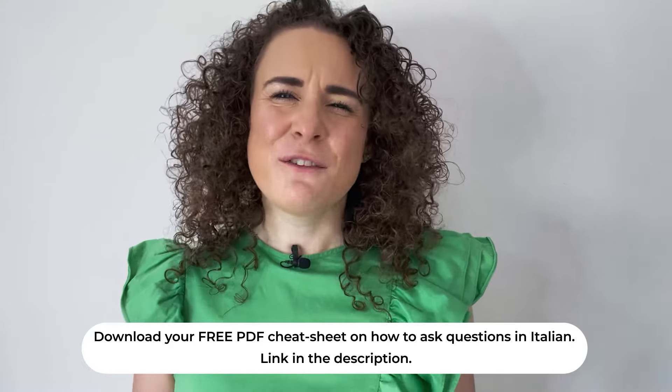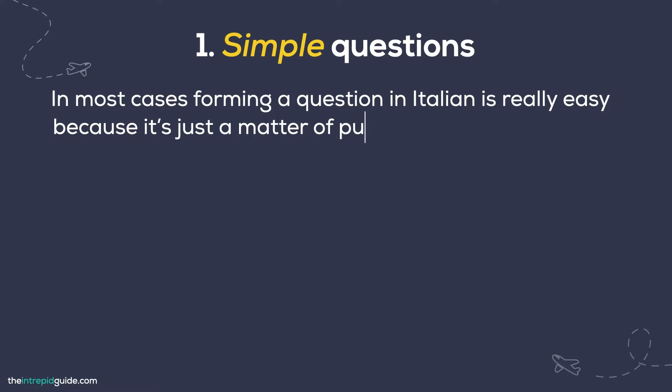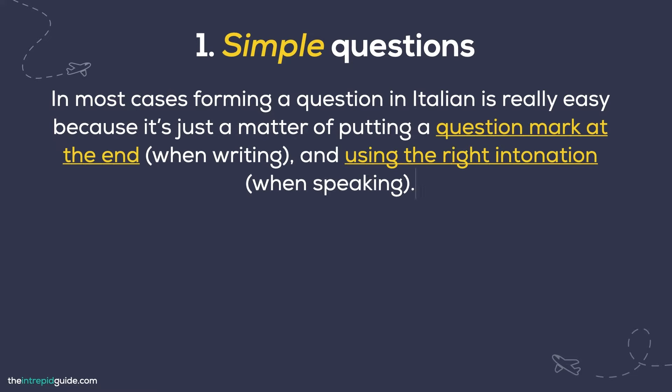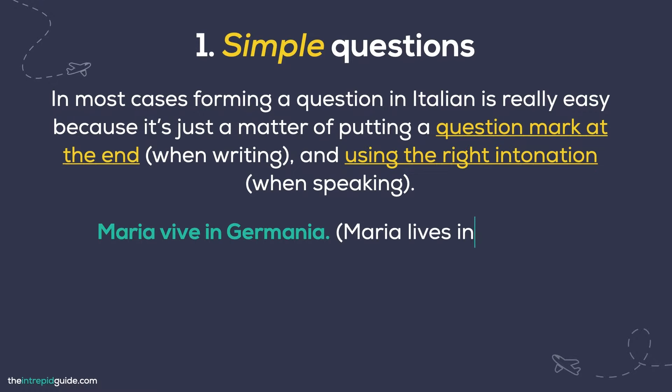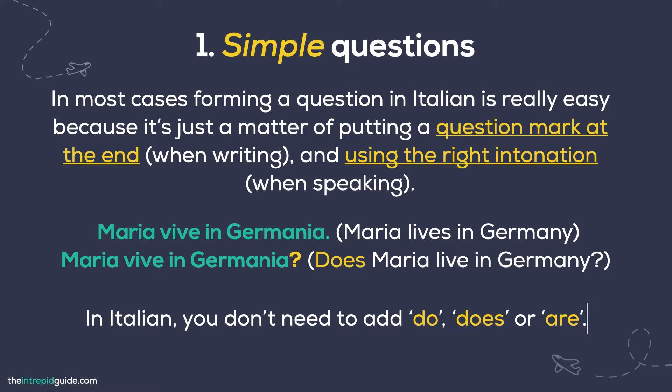Simple questions. The first thing you need to know is that asking questions in Italian is not as complicated as it sounds, so don't worry. In most cases, forming a question in Italian is really easy because it's just a matter of putting a question mark at the end when writing and using the right intonation when speaking. This is how you can turn a simple statement into a question — we call these simple questions. Here are some examples. Maria vive in Germania. Maria lives in Germany. Maria vive in Germania? Does Maria live in Germany? When we see these two sentences in Italian, we clearly recognize the second one as a question because of the question mark at the end. Whereas when we enunciate them out loud, what we'll hear is a rising pitch in the voice in the second one, which is a clear signal that a question has been asked.